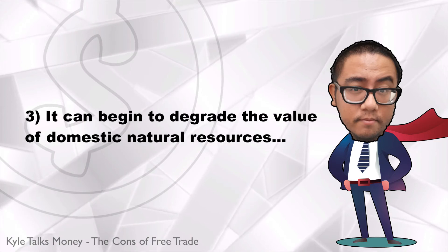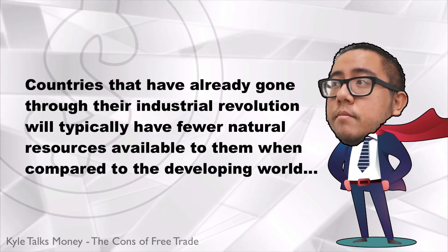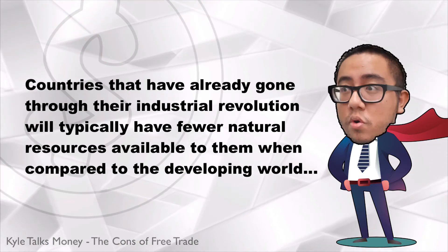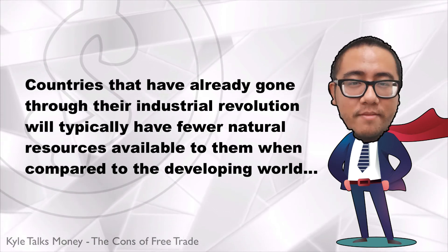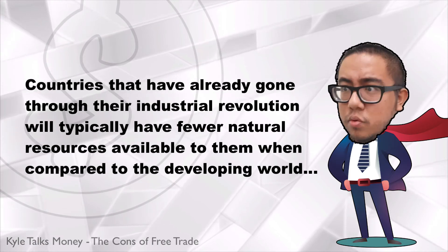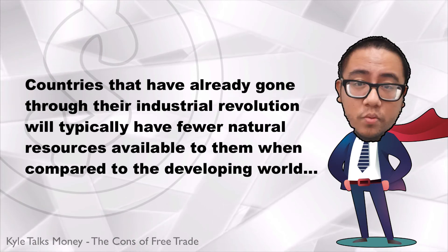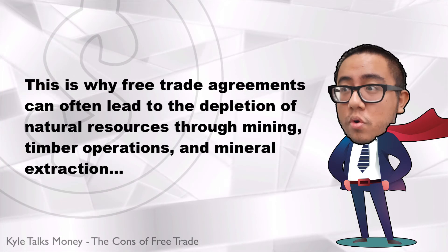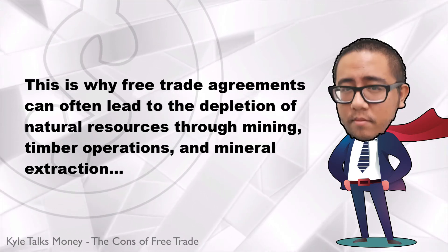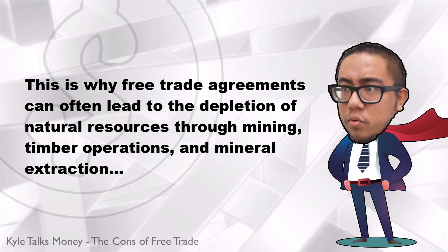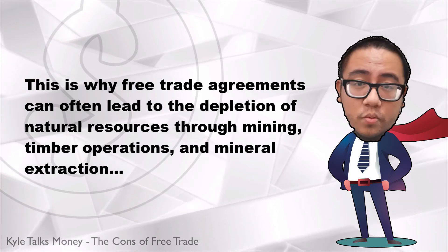Number three: free trade can begin to degrade the value of domestic natural resources. Countries that have already gone through their industrial revolution will typically have fewer natural resources available compared to the developing world. Emerging market countries do not have the same environmental protections in place because they have not experienced the same pollution challenges as the developed world. This is why free trade agreements can often lead to the depletion of natural resources through mining, timber operations, and mineral extraction. It does not take long for the fields and jungles of a developing country to be reduced to wasteland because of strip mining and deforestation.